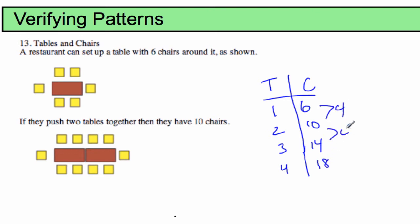Right, we saw that it was up by 4, first difference of 4s. And then we were able to come up with the formula C is equal to 4t plus 2. Okay, so that's where we were able to get to.